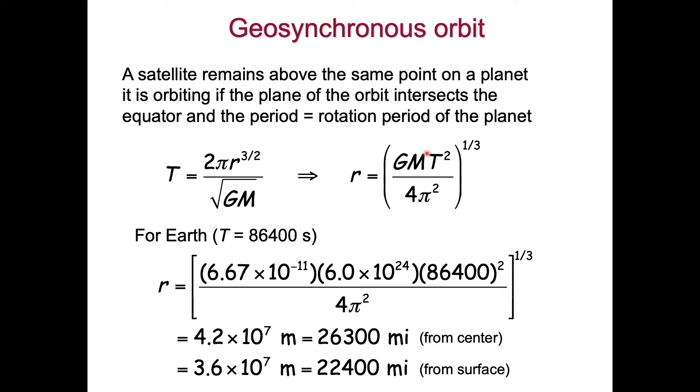We plug in the period for the rotation of the Earth about its axis into this formula, and this is the radius: 4.2 times 10 to the 7th meters, or 26,300 miles from the center of the Earth. To give you a sense of scale, the space station is around 600 miles above the surface. The geosynchronous orbit is quite a bit higher, 22,000 miles from the surface. Getting things in geosynchronous orbit takes a lot more energy. GPS really relies on that.